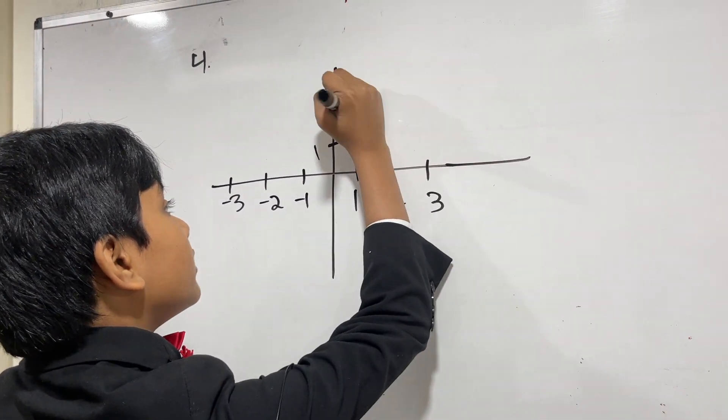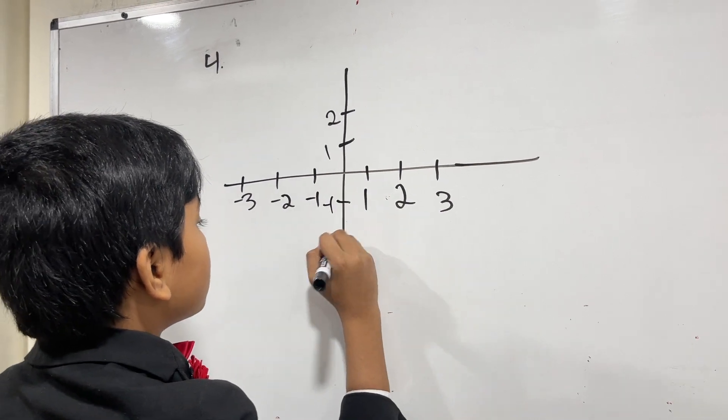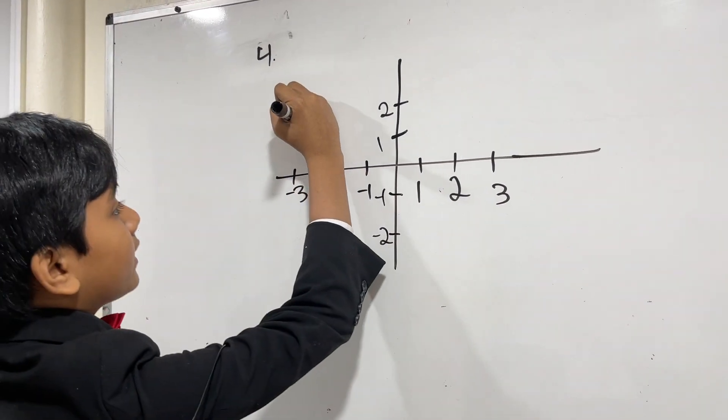We have 1, we have 2, we have minus 1, and we have minus 2. Alright, so let's get to drawing.